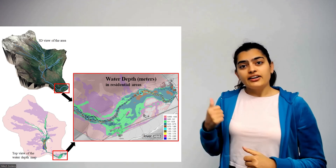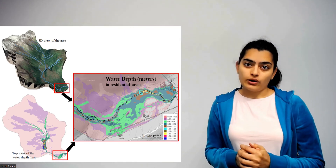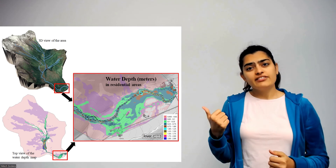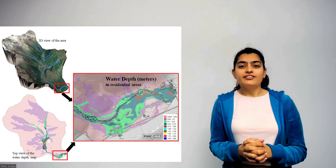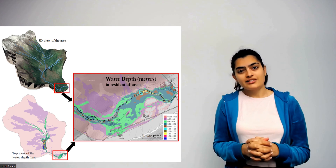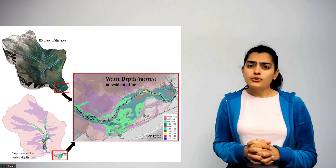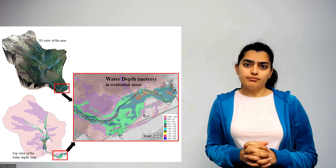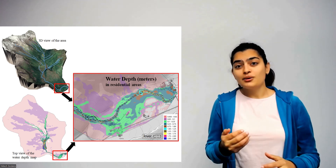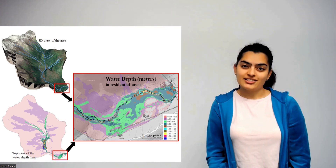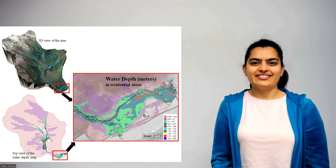These are the areas which are flooded with the corresponding water depths. If we have these kinds of maps for everywhere in the world, we can save lots of people's lives and their property, and many houses can be prevented from getting destroyed — unlike my supervisor's house. Thank you so much for listening and your attention.